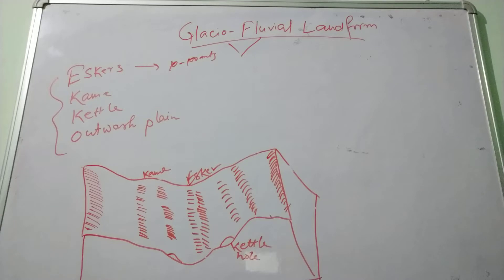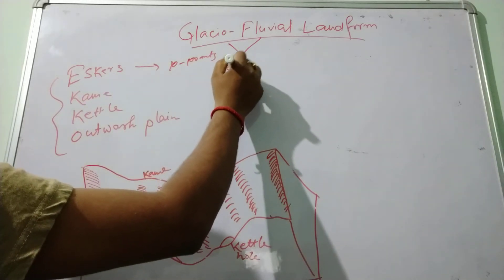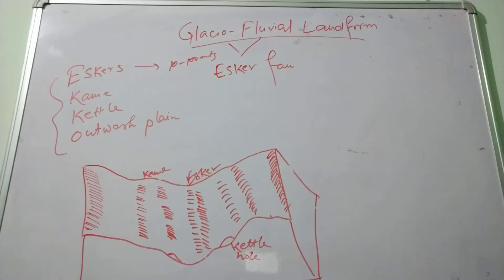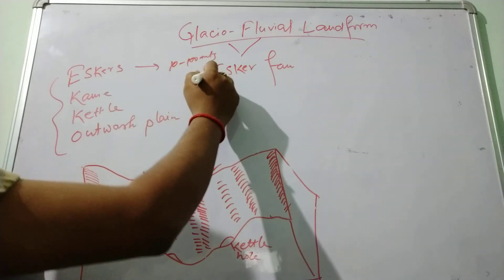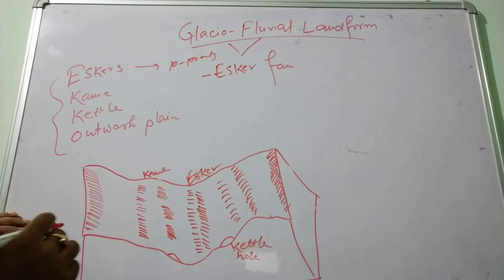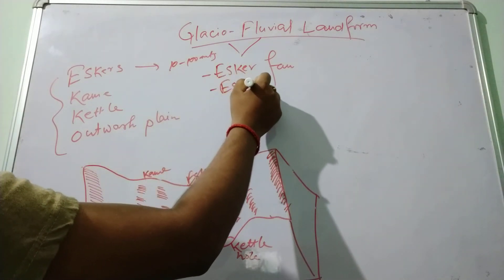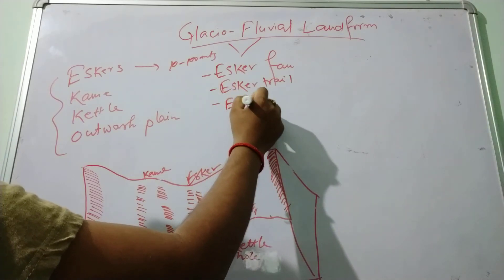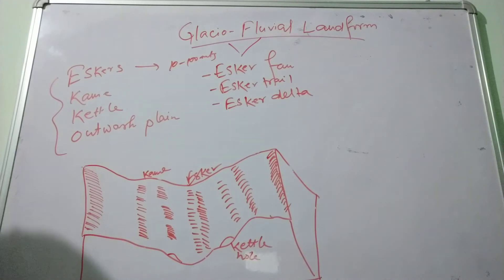Eskers assume different shapes, and based on their types or shapes, they are divided into the following categories. First is the esker fan, which refers to the fan-shaped esker built near the terminal moraines. Next is the esker trail, which is a series of eskers extended over a long distance. Next is the esker delta, which is developed where the water is stagnant, with a steep front slope forming a flat surface.